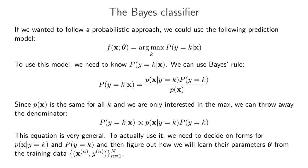If we wanted to follow a probabilistic approach to classification, then we could construct a model f that takes input x and simply predicts whichever class k has the highest probability given my input feature vector. To use this model, we need to know the probability of a particular class given our input feature vector. To do that, we can use Bayes' rule. So we have the probability of being in class k given x, which equals the density of the feature vector given the class times the probability of being in that class, divided by the density value for that feature vector.